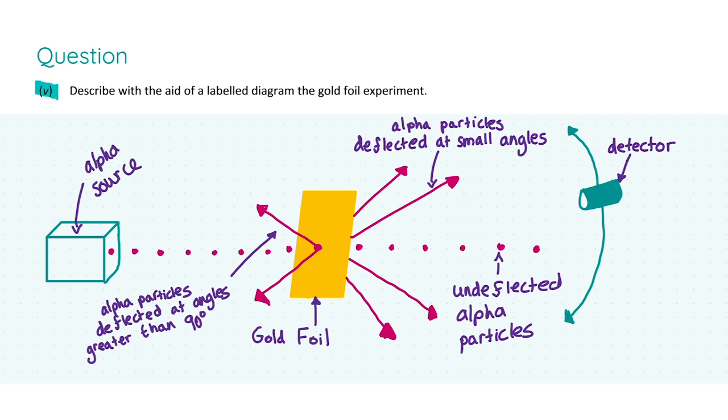In part 5, we're asked to describe with the aid of a labeled diagram the gold foil experiment. I've provided the diagram here. If you do not include your diagram, you will lose one mark, and make sure you label that diagram because it does specify. Your main components in the diagram will be your alpha source, your gold foil target, and also your detector. But I have included even more labels than that, concerning what happens to the alpha particles as they go through the gold foil. Are they deflected, undeflected, or even reflected back through the gold foil? These will help with your explanation. As they say, a picture says a thousand words, so take care of your diagrams. They will help you out.